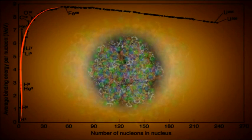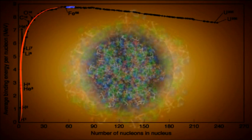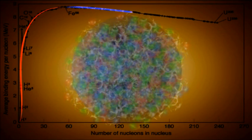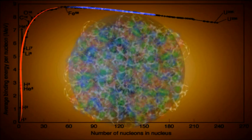So as we add nucleons past this point, the electric force, trying to tear the nucleus apart, starts winning, and each added nucleon is a little less tightly bound.